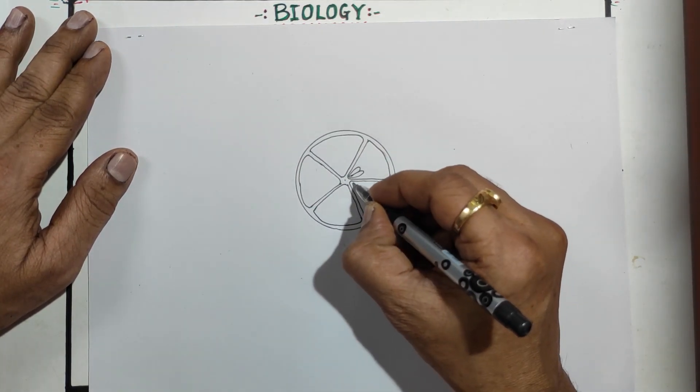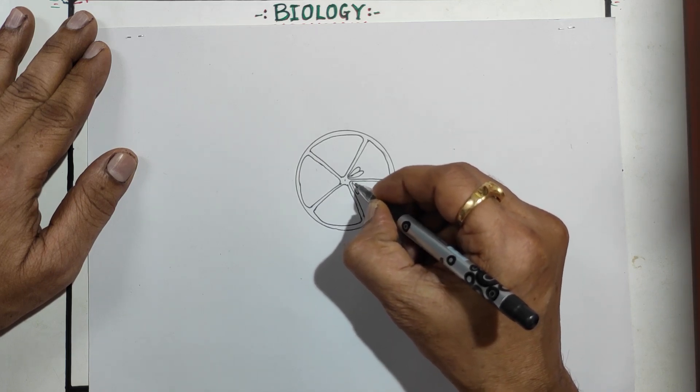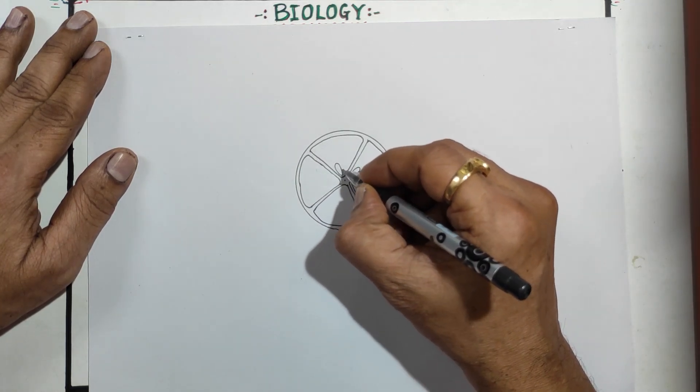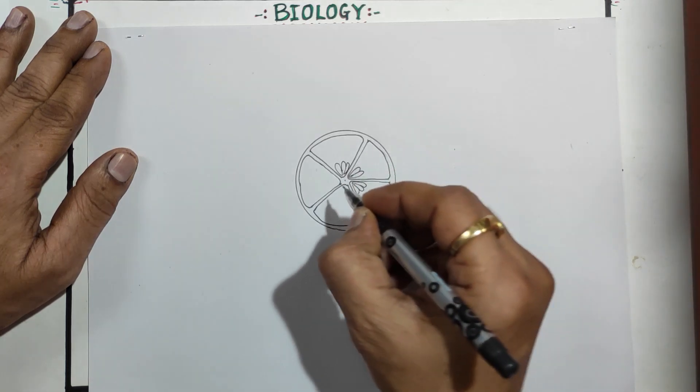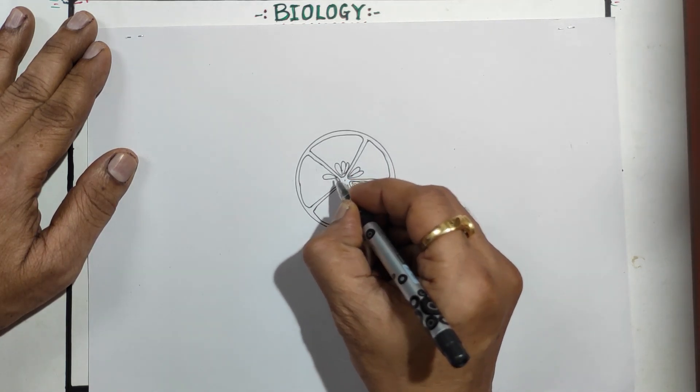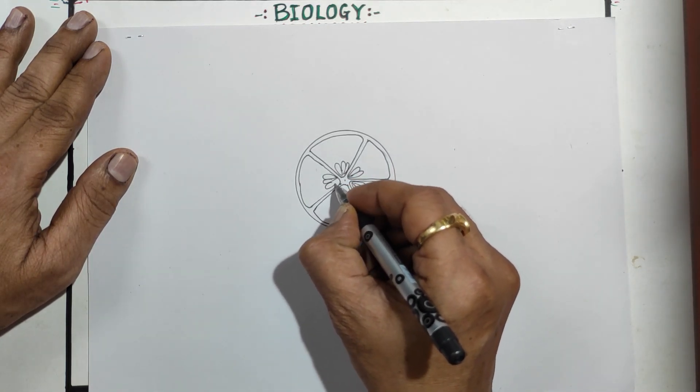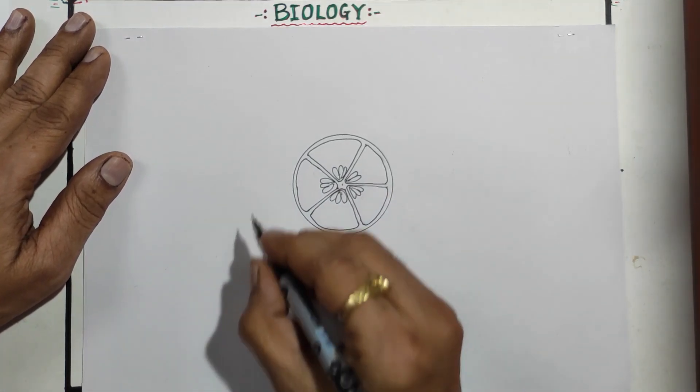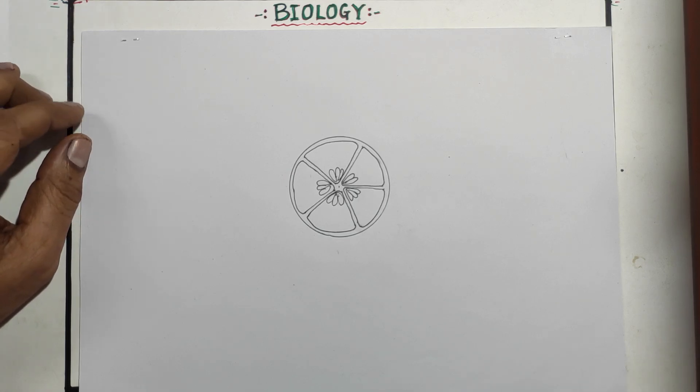This diagram is there for two or one mark in the practical exam compulsory diagram, so you have to do practice of that. This we can do in one minute also if you do it fast. So these are the ovules which are inside this ovary. This is a T.S. of ovary diagram.